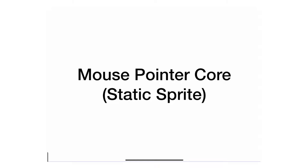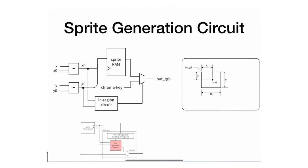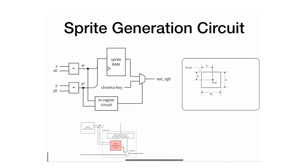We now move into developing a mouse pointer core, which is based on the generic sprite generation circuit we've seen before. We will go through the implementation step by step, covering all the different components. We'll begin by focusing on the pixel generation part, then look at the wrapping circuit and the blender.